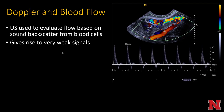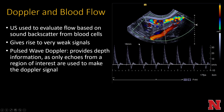Ultrasound evaluates flow based on sound backscatter from moving blood cells within vessels, giving rise to very weak signals. You can obtain both color Doppler and spectral Doppler. Spectral or pulse wave Doppler provides depth information, using only echoes from a region of interest. You place a sampling cursor within the vessel — flow below the baseline is going away from the transducer, flow above the baseline is going toward it. In color Doppler, red is typically assigned to flow toward the transducer and blue away from it.